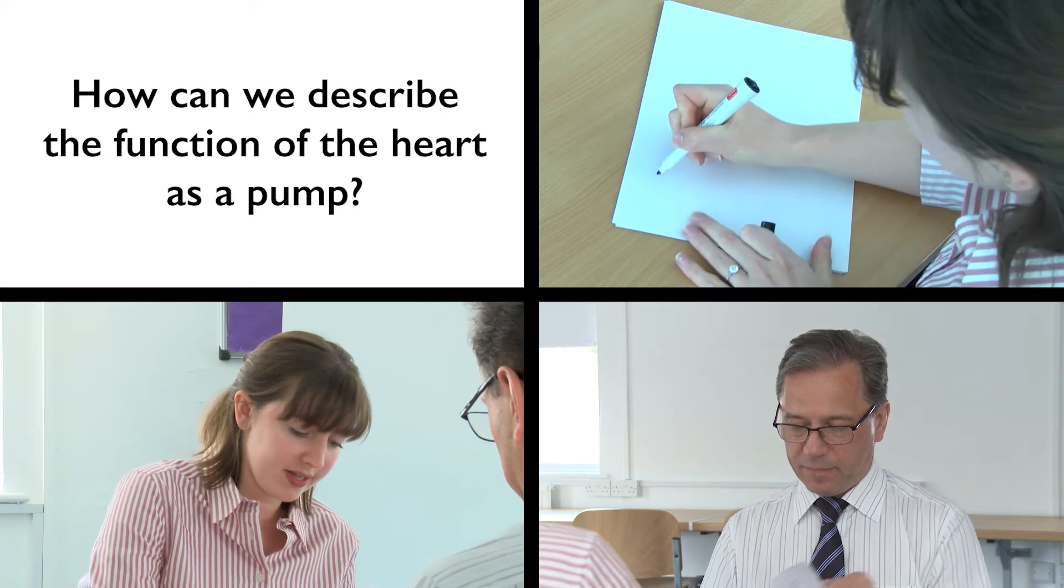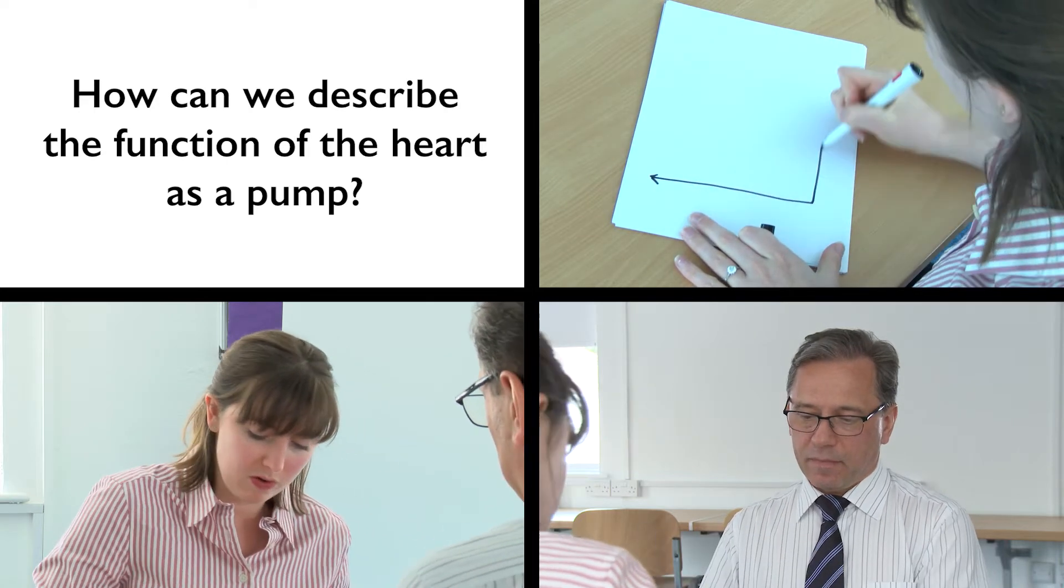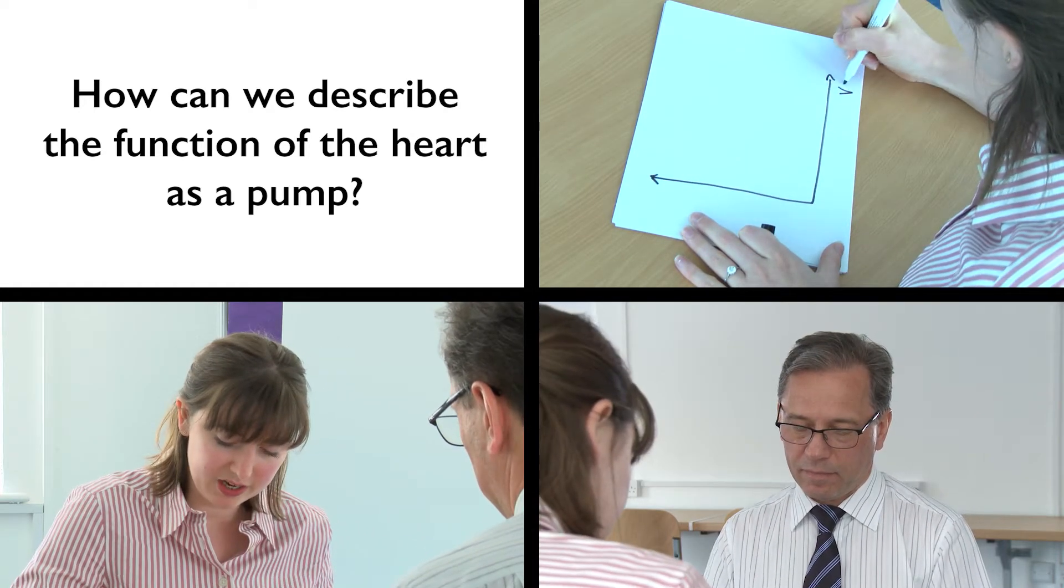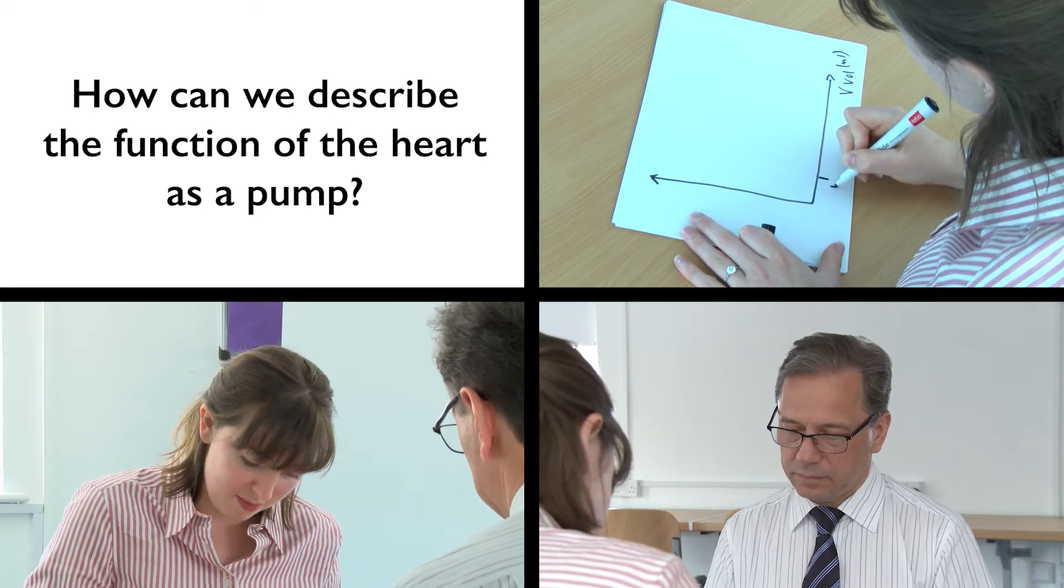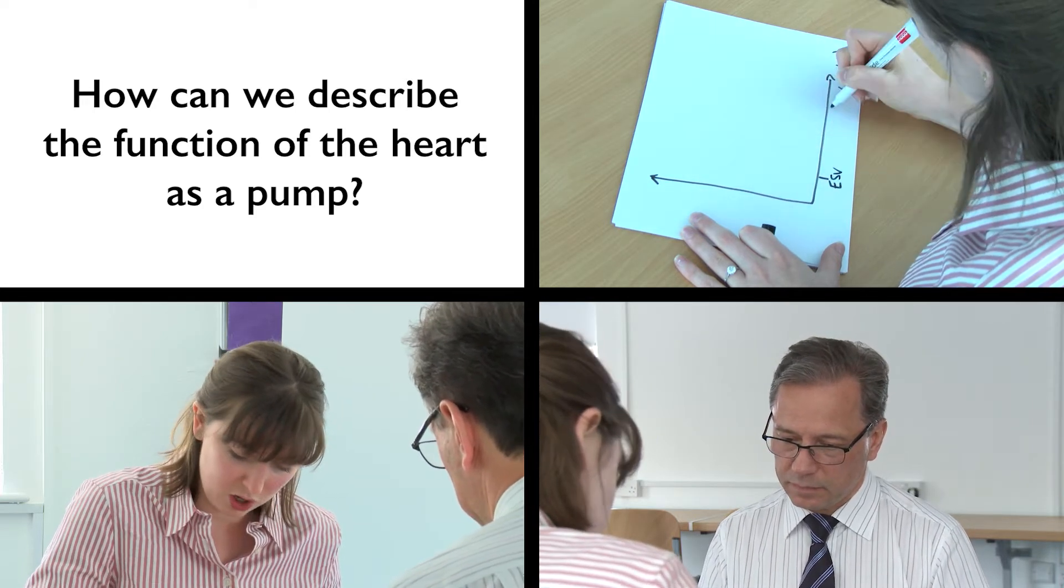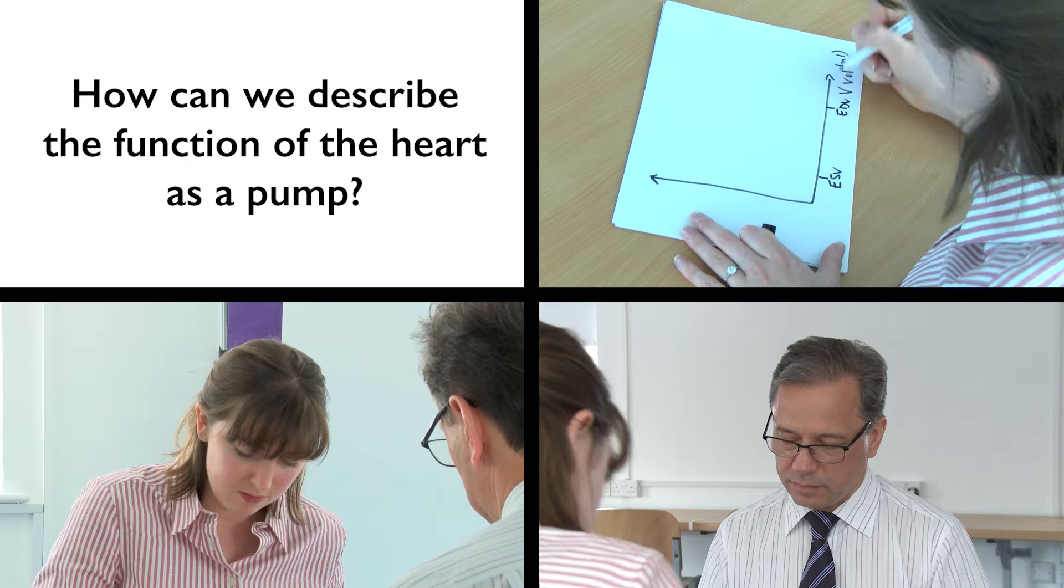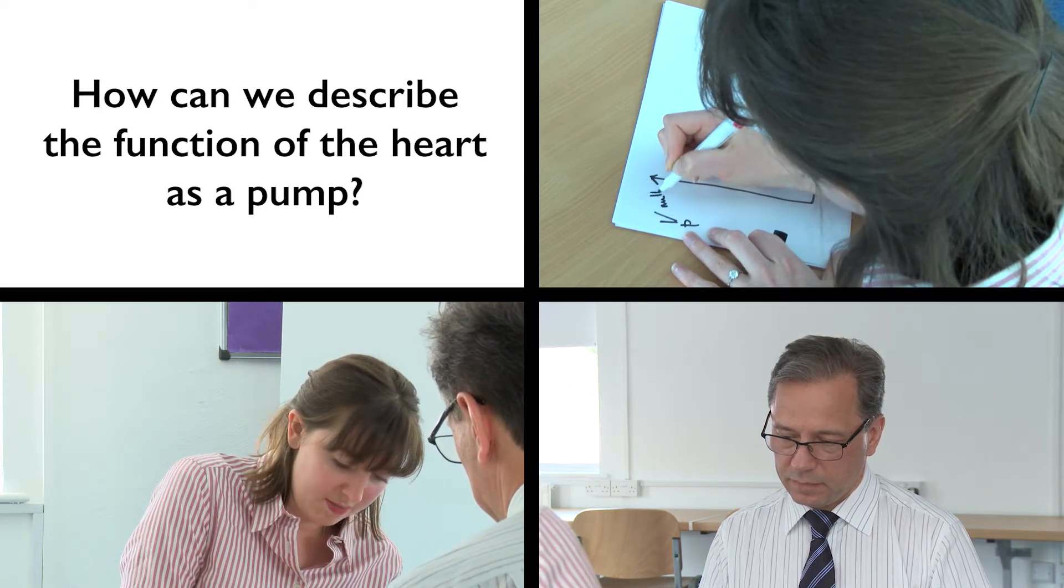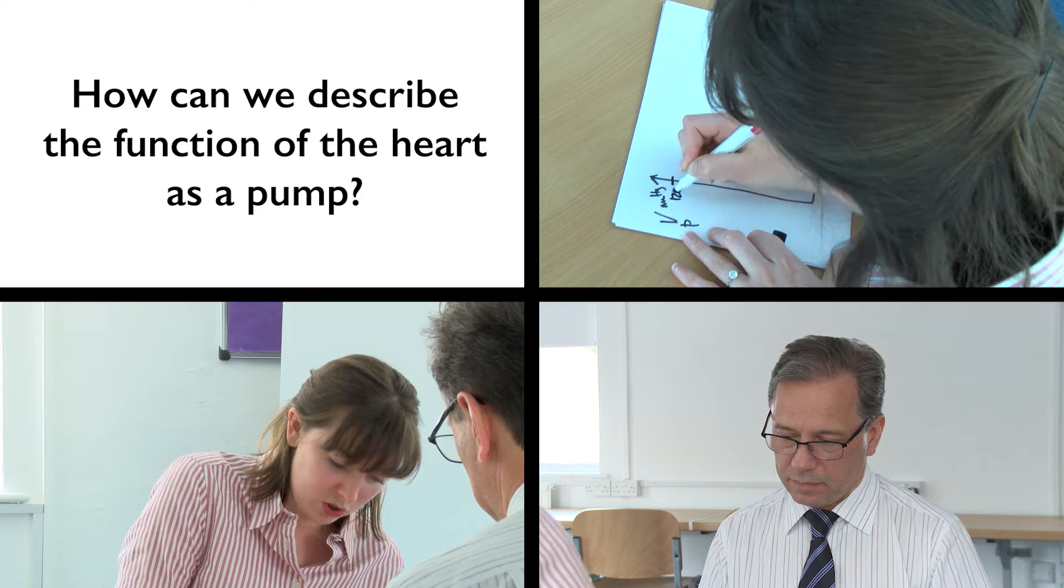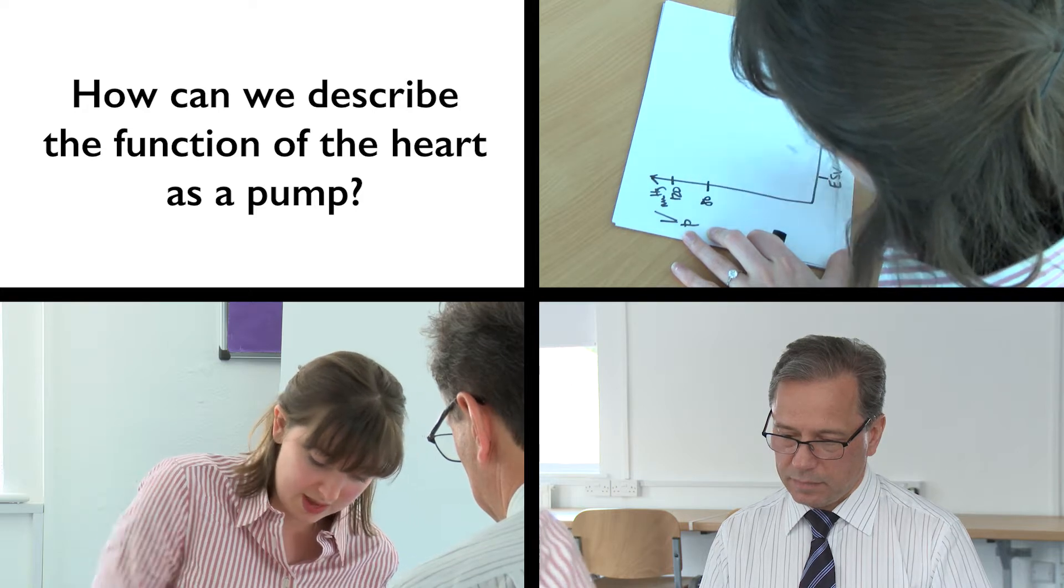Would you like to draw it for me? Sure, so it's a pressure volume graph, looking at the ventricular volume down here in mils, starting with the end systolic volume and the end diastolic volume, and then the ventricular pressure in millimeters of mercury up here, with about 120, 180, and then 0.